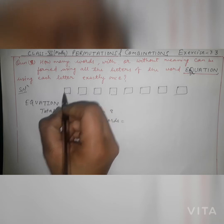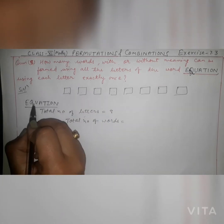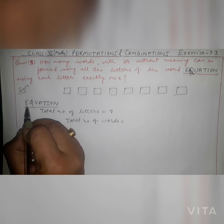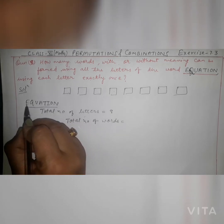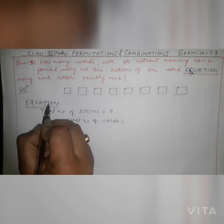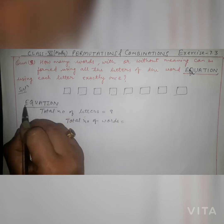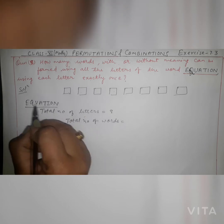In the first letter box, you can see this equation. One thing to notice: in EQUATION, no letter is repeated — E, Q, U, A, T, I, O, N — all are single. E appears only one time, so E will not appear again. Similarly, Q will not appear again, U will not appear again, A will not appear again.